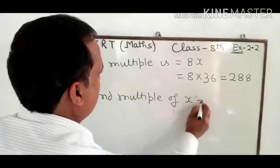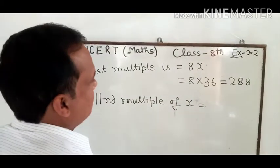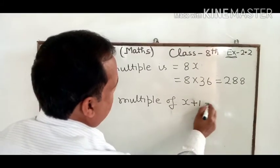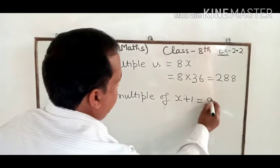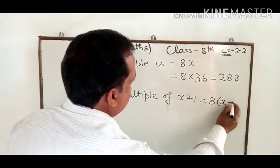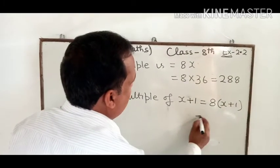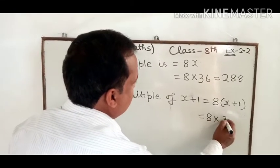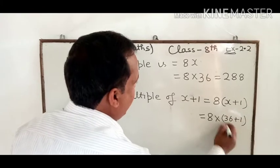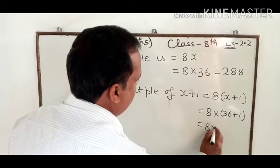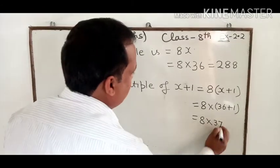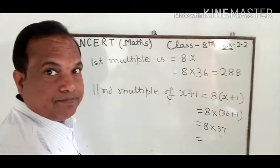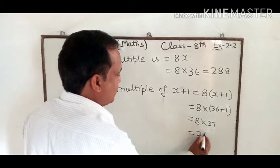Now the second multiple of x plus 1 is 8 times x plus 1. So 8 times 36 plus 1, that is 8 times 37. We multiply both numbers to get 296.